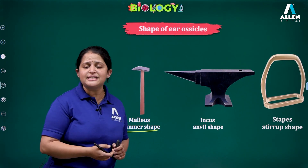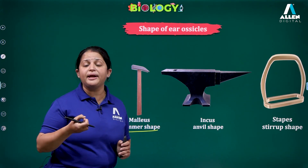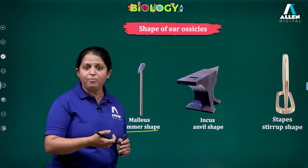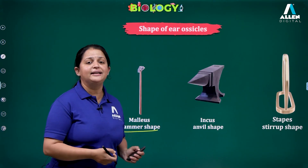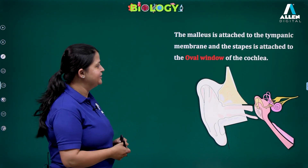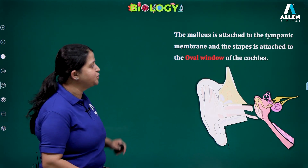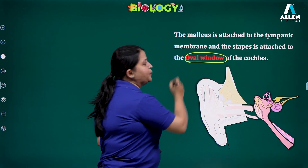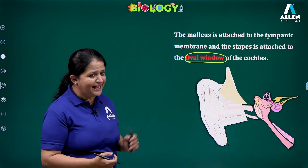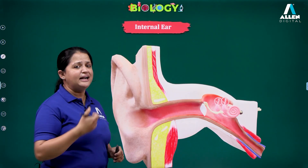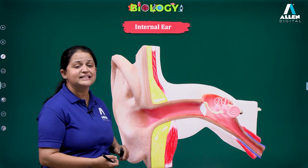The role of these tiny ossicles is to receive sound vibrations from the tympanic membrane and channelize those sound waves to the internal ear. The stapes is attached to the oval window, which is a part of the cochlea. Let us understand the cochlea and the other structures of the internal ear.